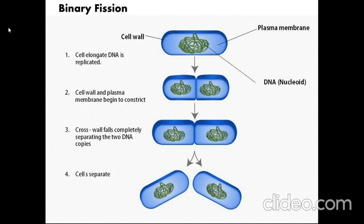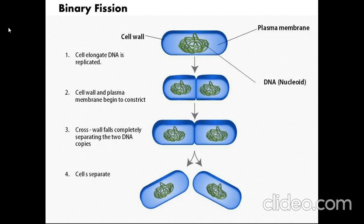Now we will see how bacteria reproduce by binary fission, or amitosis. A bacterial cell has naked DNA, or a nucleoid, which is the region where the DNA belongs. This naked DNA is freely floating in the cytoplasm, covered by the plasma membrane and cell wall. First, the DNA is replicated into two. Then the cell wall and plasma membrane begin to constrict and slowly separate into two new cells.